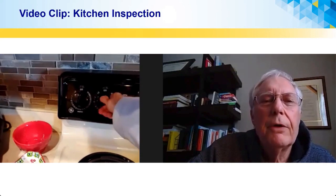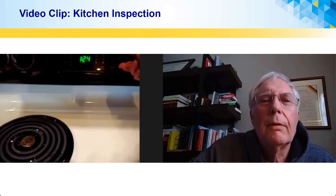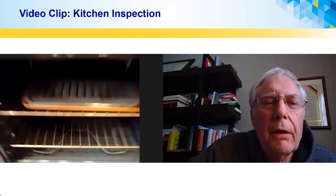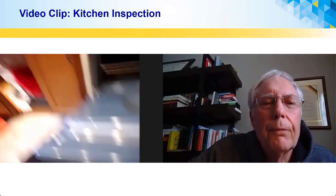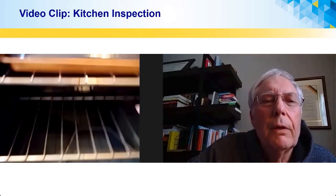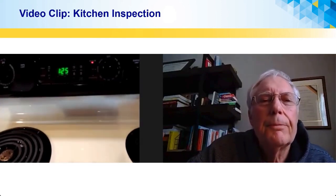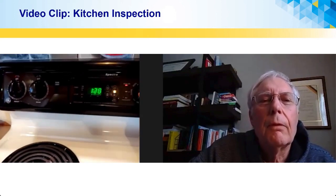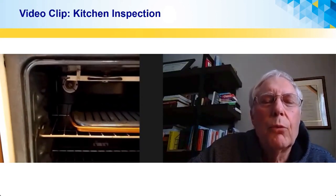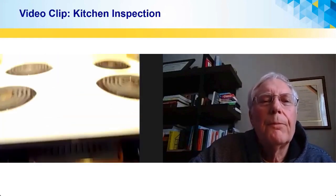Turn on the bake function. There's the oven. Let me look at that oven gasket door — around the door. That's good. Is it getting warm? It's getting warm. Go ahead and shut it off. Now put the broiler function on. Is the broiler function getting warm? Yep. Go ahead and shut it off.